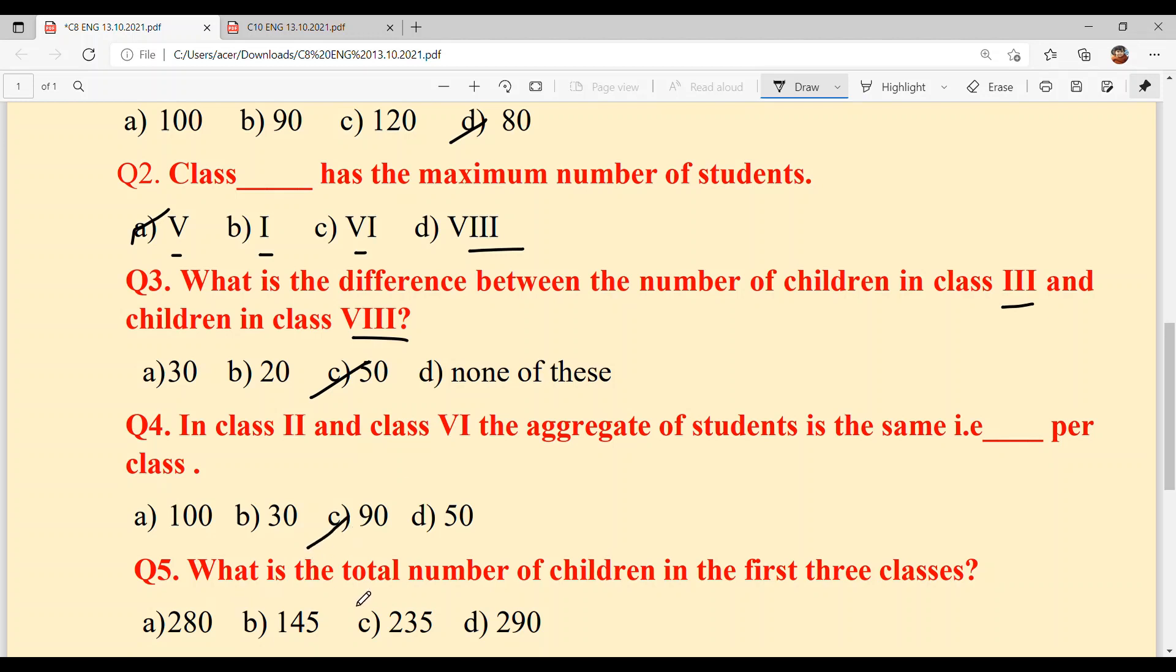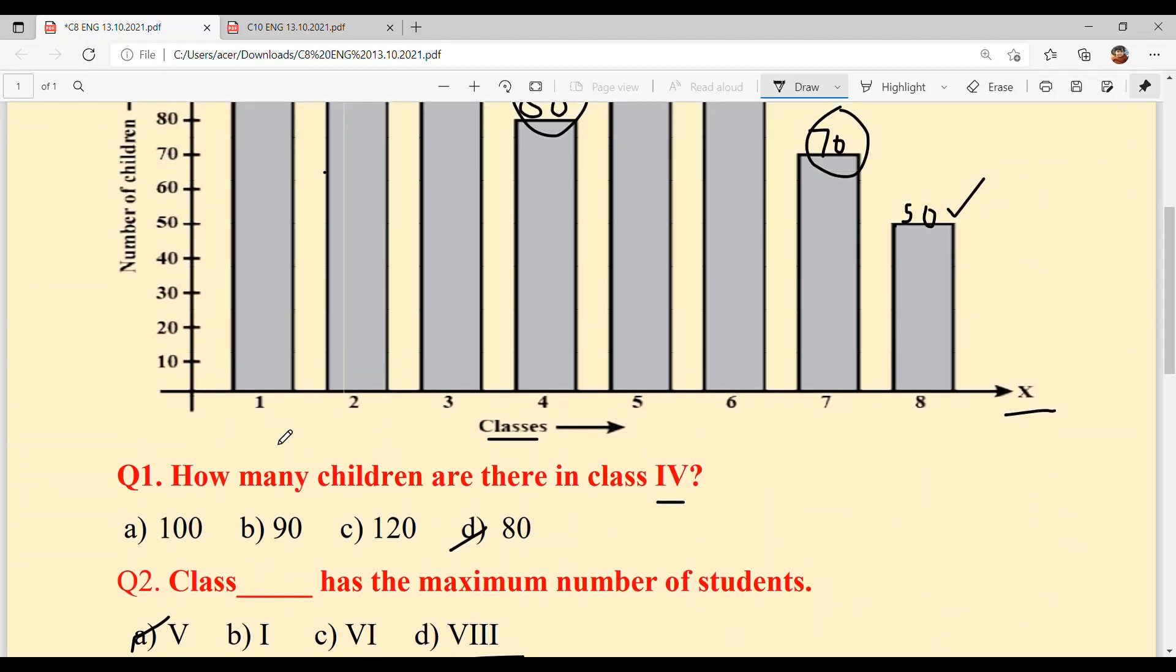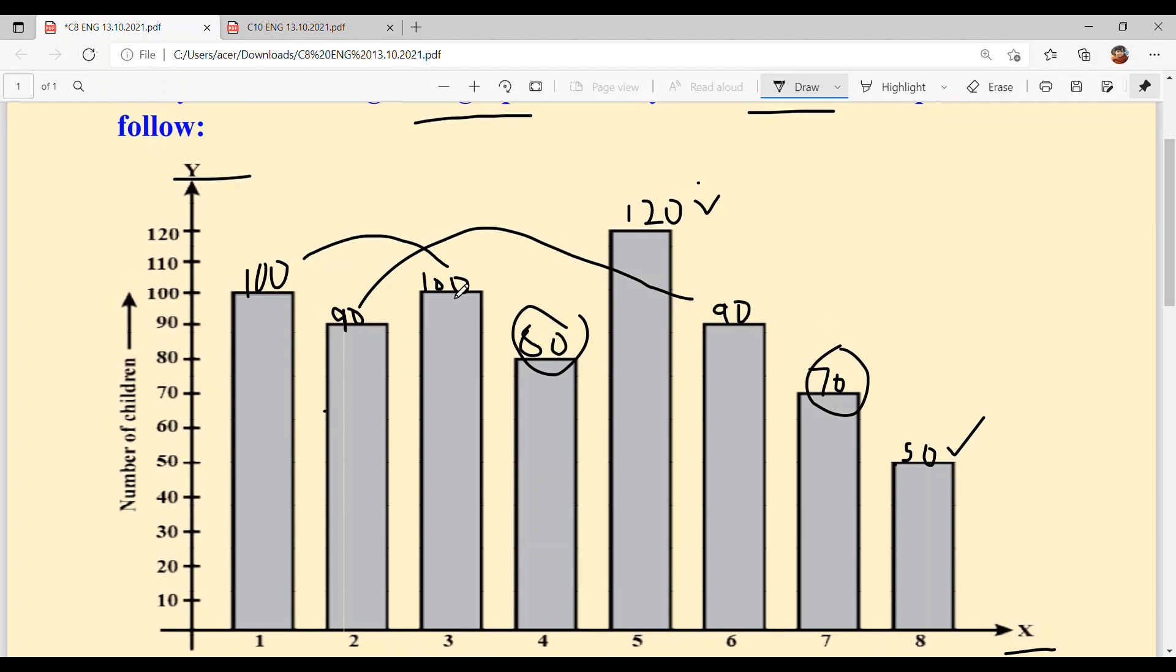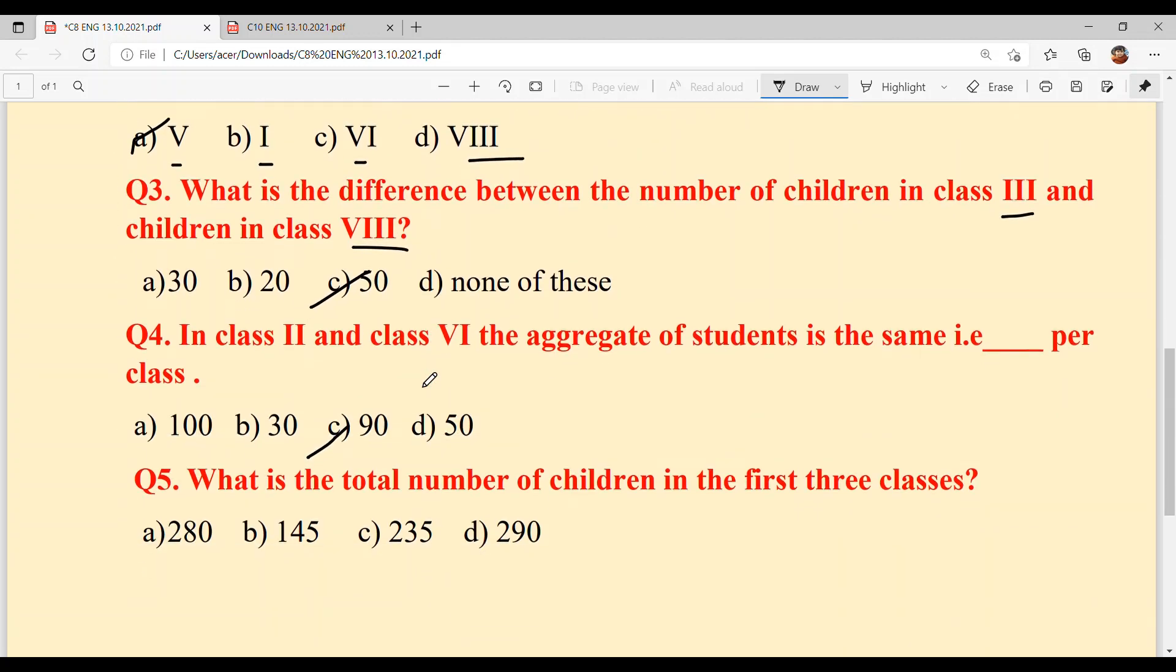And last is, what is the total number of children in first three classes? It's quite easy. 100 plus 100 equals 200, 200 plus 90 equals 290. Option D.